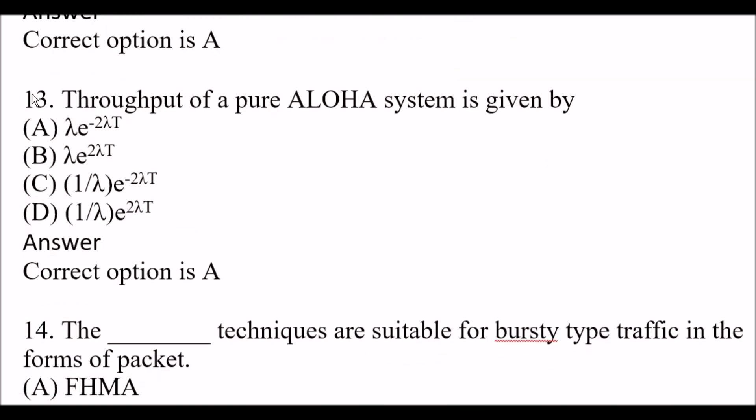Next question: Throughput of a pure Aloha system is given by — Option A: λ × e to the power of minus 2λt. Option B: λ × e to the power of 2λt. Option C: (1/λ) × e to the power of minus 2λ × t. The right answer is Option A, λ × e to the power of minus 2λt, where t stands for throughput.